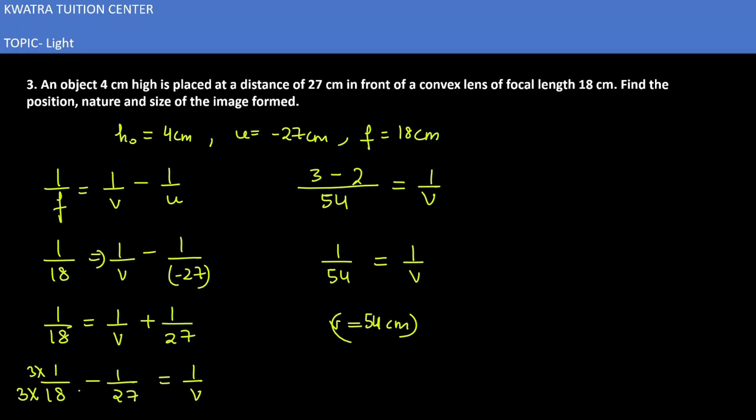Now let's see magnification. What will we need to do? Magnification will be v over u equals hᵢ over h₀. Because this is the case of lens, so positive work. V's value is 54, u's value is minus 27.